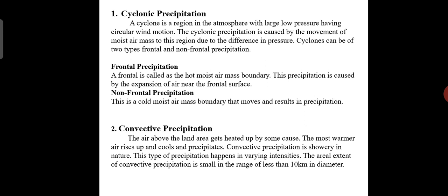Frontal precipitation is caused by a hot moist air mass boundary. This precipitation is caused by the expansion of air near the frontal surface. Non-frontal precipitation is a cold moist air mass boundary that moves and results in precipitation.